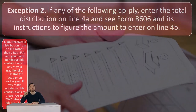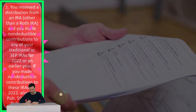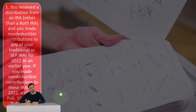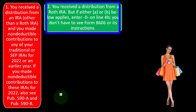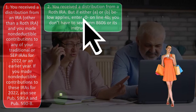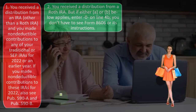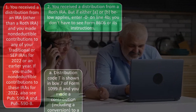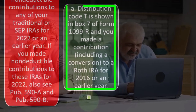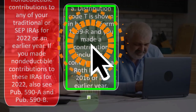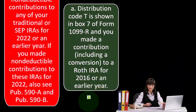One: if you received a distribution from an IRA other than a Roth IRA and you made non-deductible contributions to any of your traditional or SEP IRAs for 2022 or an earlier year — if you made non-deductible contributions for 2022, see publication 590A and 590B. Two: you received a distribution from a Roth IRA, but if either A or B below applies, enter zero on line 4B and you don't have to see Form 8606. A: distribution code T is shown in box 7 of Form 1099-R and you made a contribution, including a conversion, to a Roth IRA for 2016 or an earlier year.